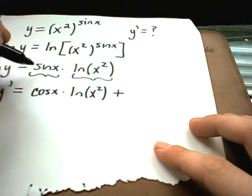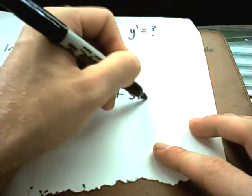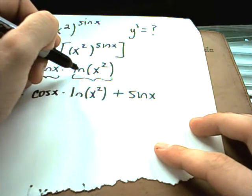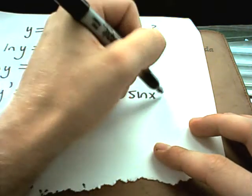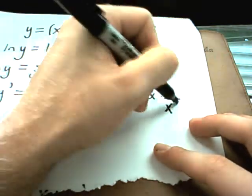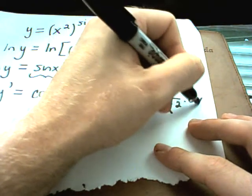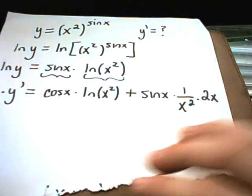Plus, now I'll leave the sine of x alone. And then when I take the derivative of ln of x squared, I'll get 1 over x squared, and then I have to multiply that by the derivative of the inside, or 2x.